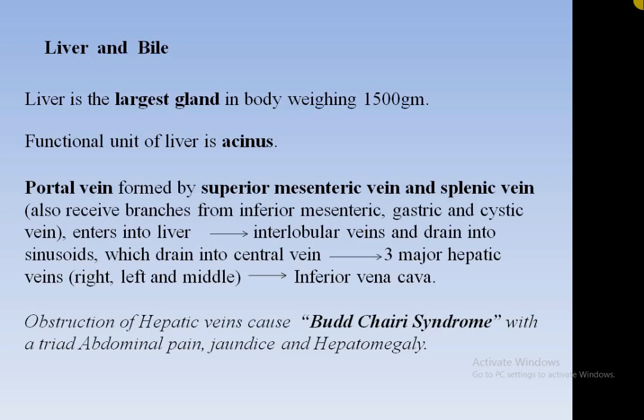The sinusoids drain into the central vein, from which three major hepatic veins arise — right, middle, and left — draining into the inferior vena cava. Obstruction of these three major hepatic veins leads to Budd-Chiari syndrome. The triad is abdominal pain, jaundice, and hepatomegaly. The portal vein also receives branches from the inferior mesenteric vein, gastric vein, and cystic vein.